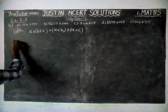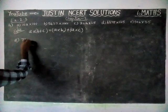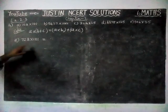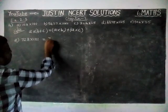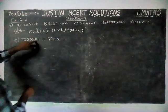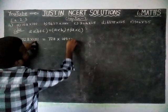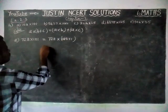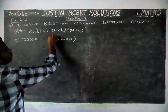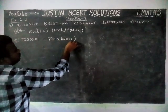Now we are going to find the answer for option A. 728 into 101 — we are going to separate 101 as 100 plus 1. So 728 into 100, plus 728 into 1.